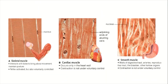Now let's go to muscle tissues. We have three types: skeletal muscles, cardiac muscles, and smooth muscles. The skeletal muscles are also known as voluntary muscles. They interact with bone to bring about movement and they maintain posture.